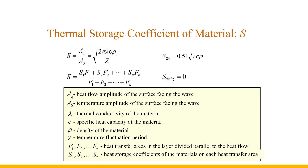The heat storage coefficient of a material is an index showing the sensitivity of the surface to harmonic heat reaction. The larger the S value, the smaller the surface temperature fluctuation, and the better the thermal stability of the material. Since the S value is related to the fluctuation period, for the same material, the longer the fluctuation period, the smaller the S value, and the greater the temperature fluctuation of the surface.